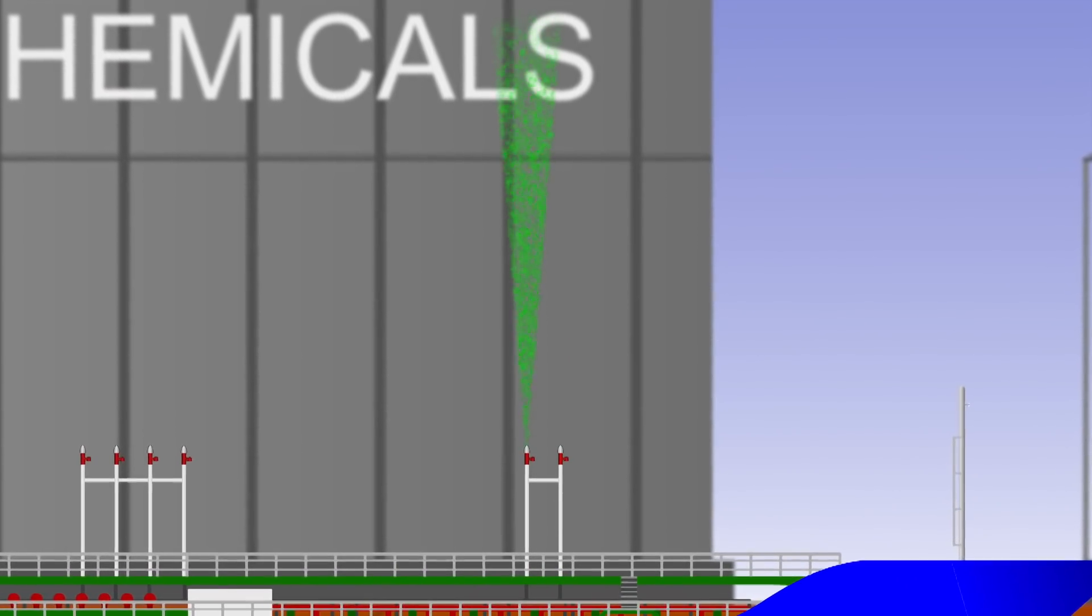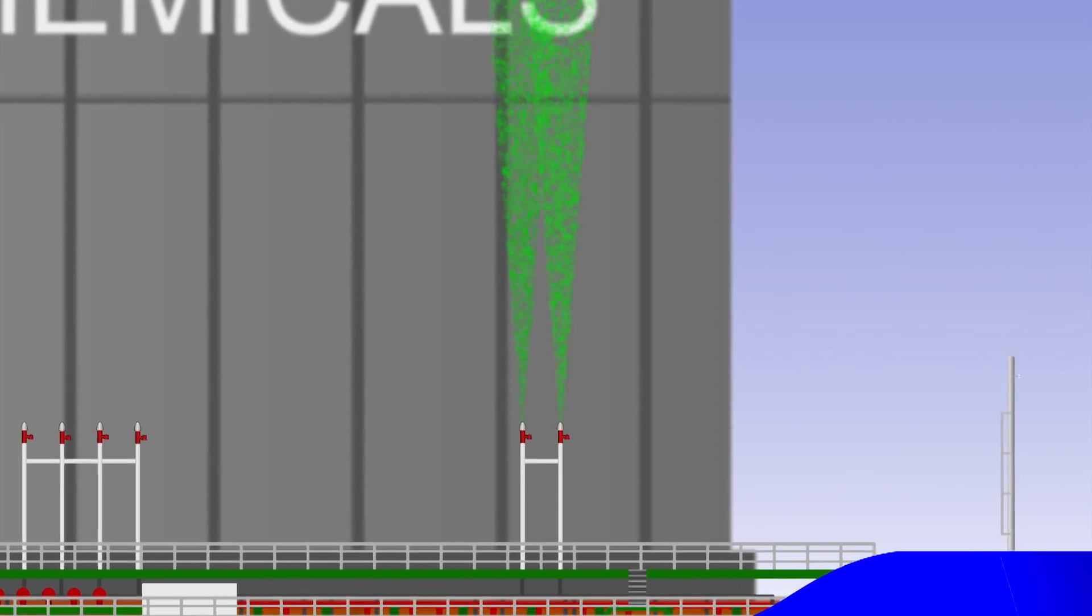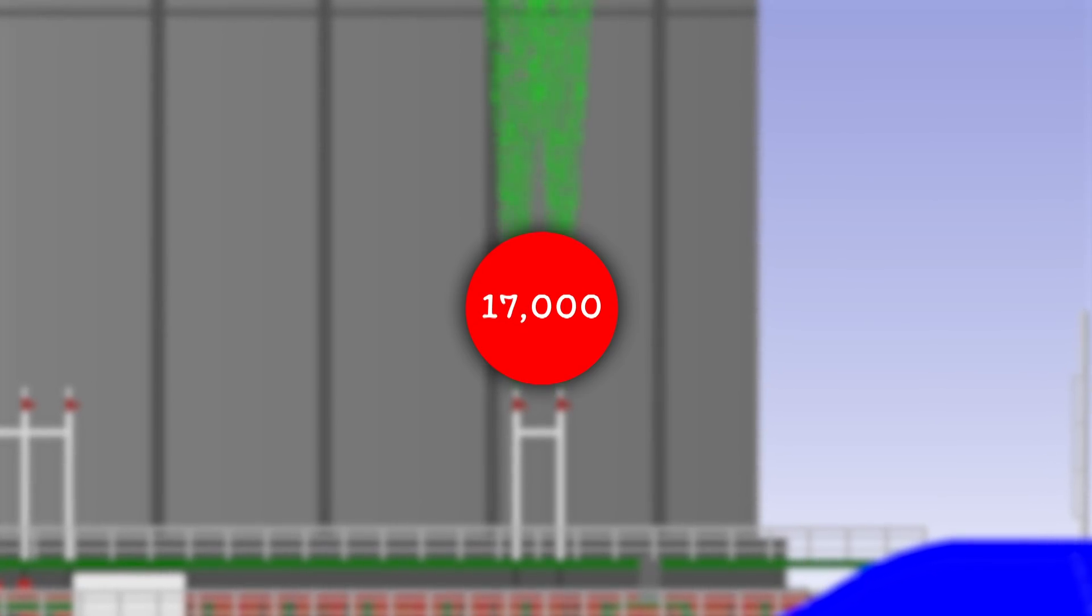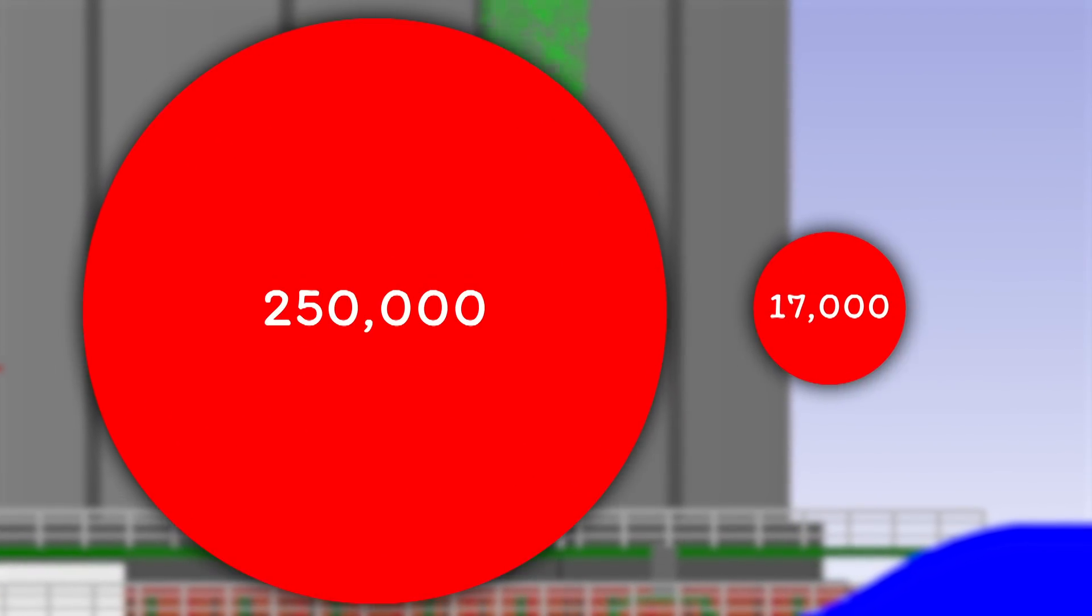While the valves offer great protection, they're not designed to cope with high volumes. Faircam Philly's PV valves could cope with approximately 17,000 cubic feet per hour, but the terminal's nitrogen line could supply up to 250,000.